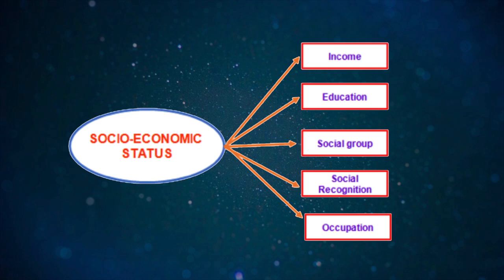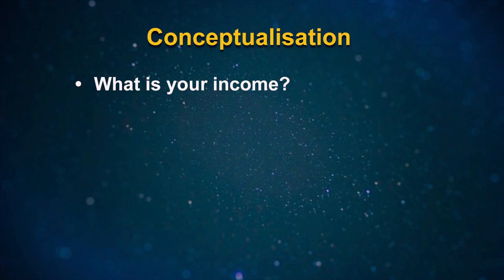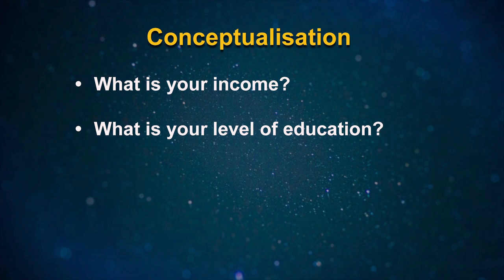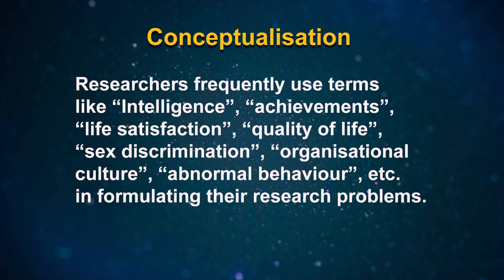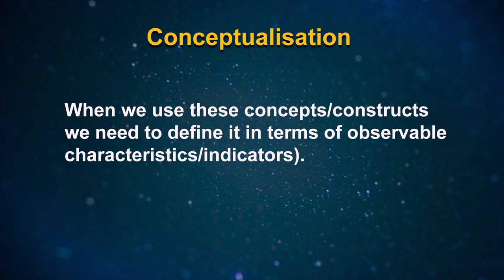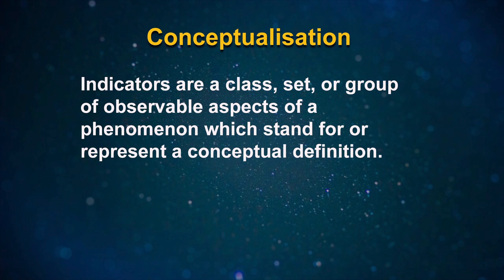It is now easy to study socioeconomic status because income, levels of education, social group, and social recognition are observable characteristics. We can collect data by asking questions such as: What is your income? What is your level of education? What is your social group? Are you a member of Gram Panchayat? Researchers frequently use terms like intelligence, achievements, life satisfaction, quality of life, sex determination, organizational culture, and abnormal behavior in formulating research problems. When we use these constructs, we need to define them in terms of observable indicators, which are a class or group of observable aspects of a phenomenon that represent a conceptual definition and indicate the presence or absence of the concept being studied.